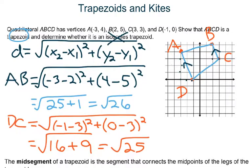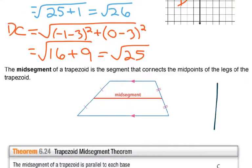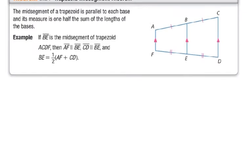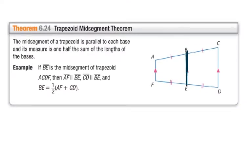The midsegment of a trapezoid is the segment that connects the midpoints of the legs. These two points are midpoints of the two legs, and joining them is called the midsegment. The midsegment is always parallel to the two bases. Its length equals the sum of the two bases divided by two.